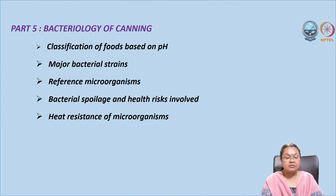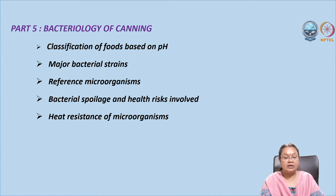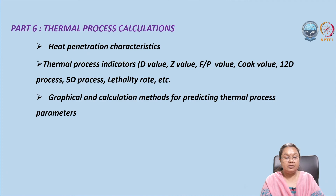In part five on bacteriology, we will classify foods based on their pH, discuss the major microbial strains associated with spoilages, and discuss the reference microorganism for canning — Clostridium — along with the health risks caused by these microorganisms. In part six, we will discuss heat penetration characteristics and thermal process indicators such as D value, Z value, F value, and cook value. We will also discuss the 5D and 12D concepts, lethal rate, and graphical methods for evaluation.